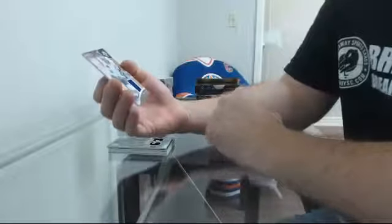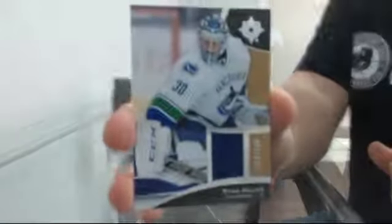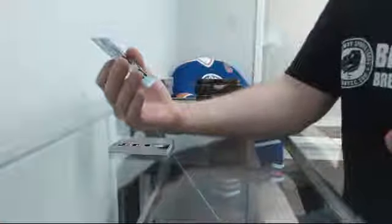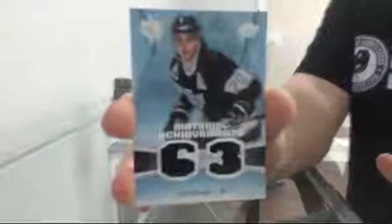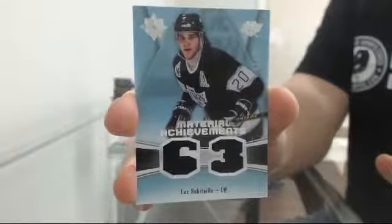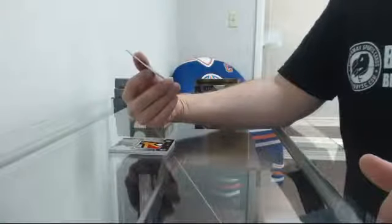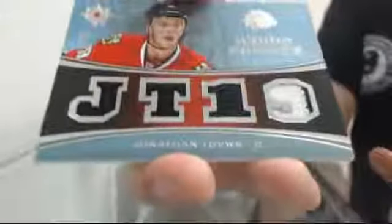Jersey, 144-199 going to Vancouver, Ryan Miller. Material Achievements, 61-99 going to the Kings, Luc Robitaille. Iconic Fabrics going to Chicago, 42-65, John Davies.